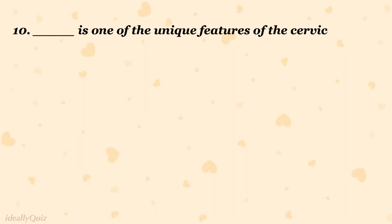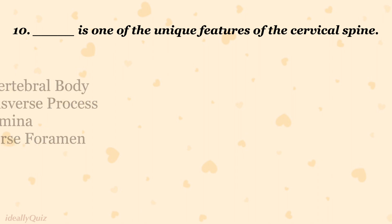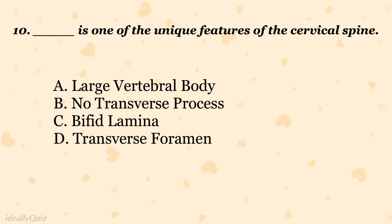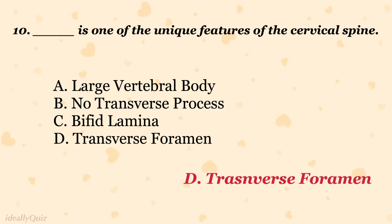Which is one of the unique features of the cervical spine? A. Large vertebral body, B. No transverse process, C. Bifid lamina, D. Transverse foramen. The correct answer is D. Transverse foramen.